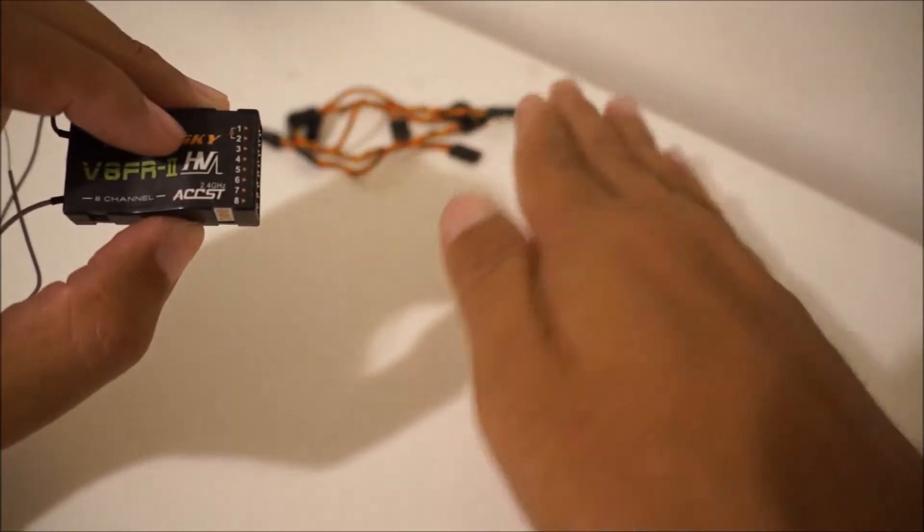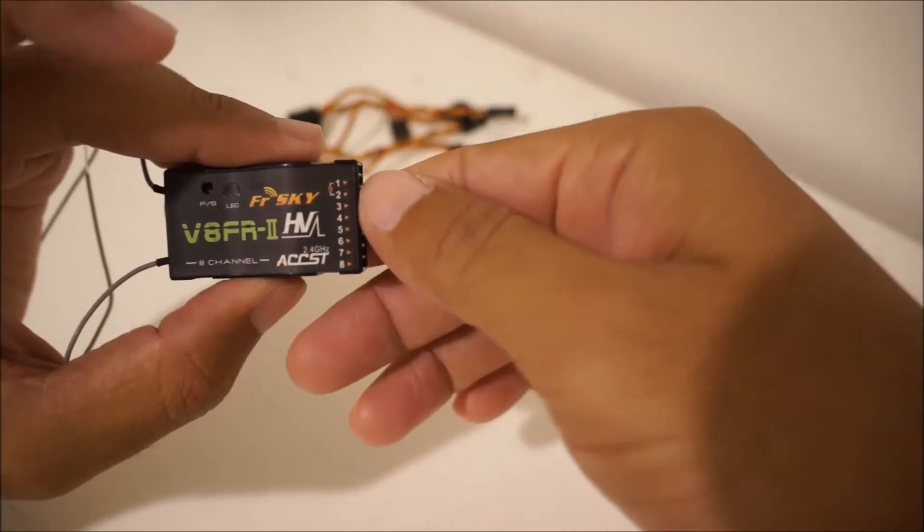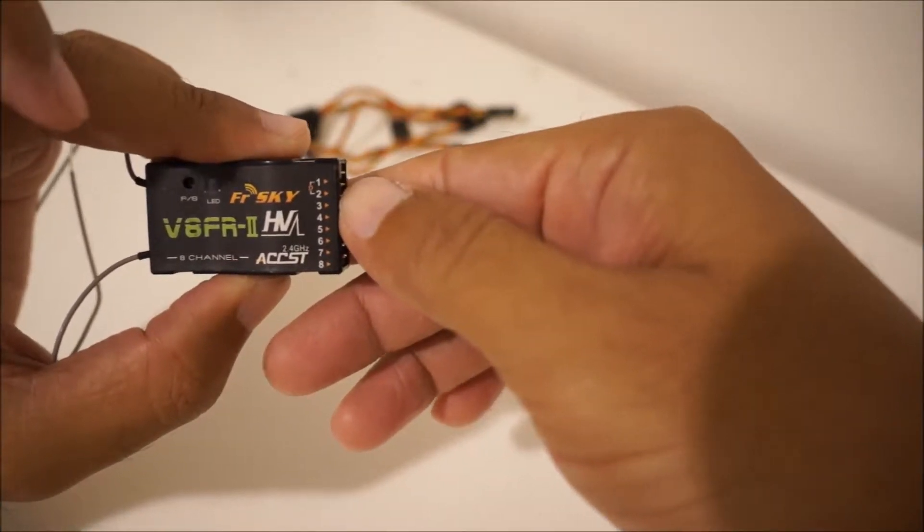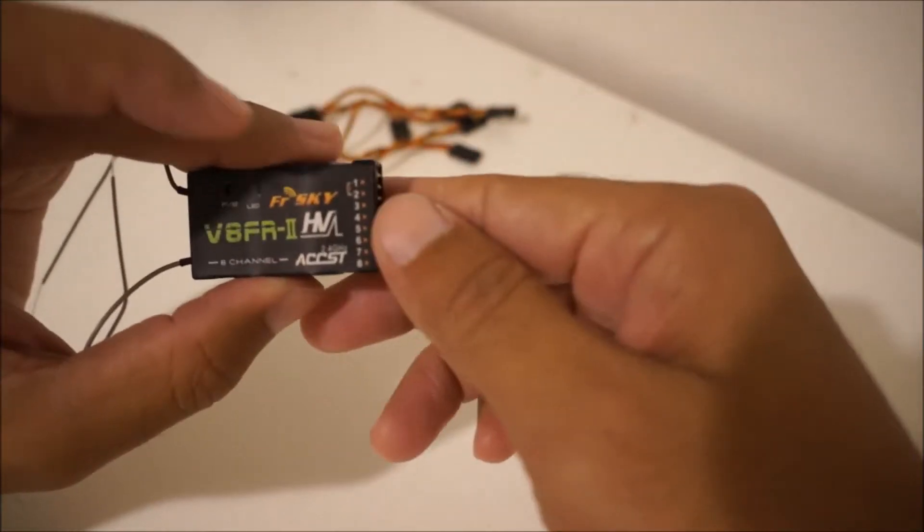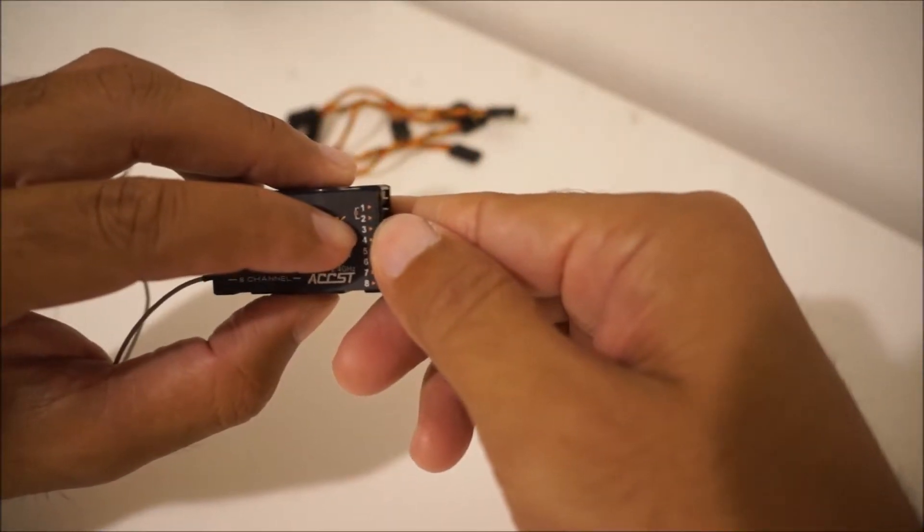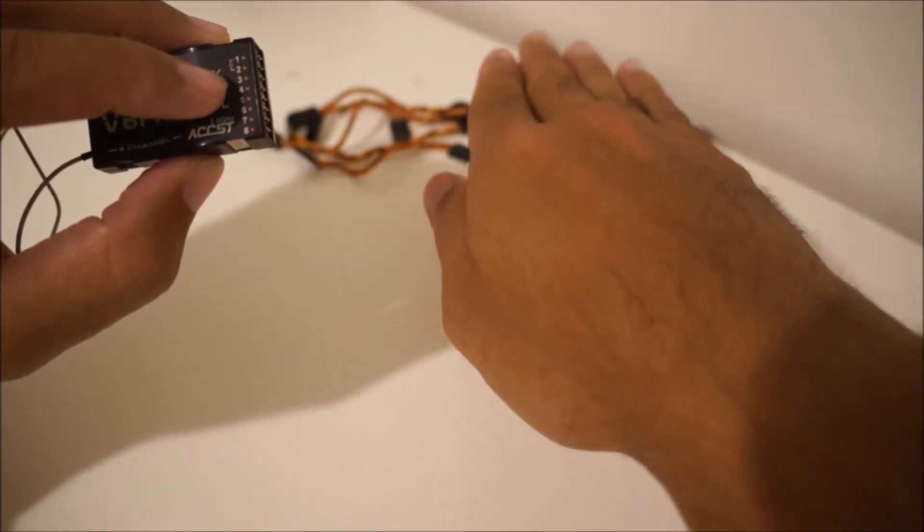That means if your helicopter or quadcopter is facing this way, that controls the roll back and forth, left to right. Number two is the elevator, that means it's going to pitch forward or pitch backwards.